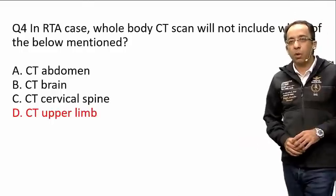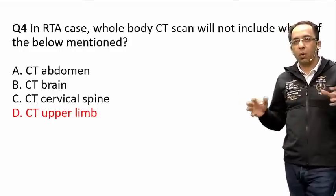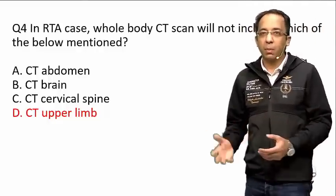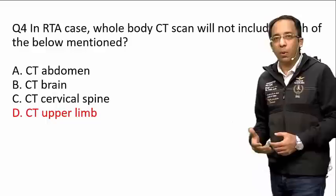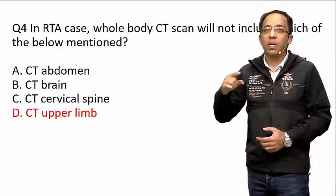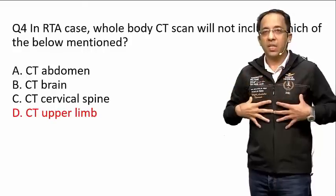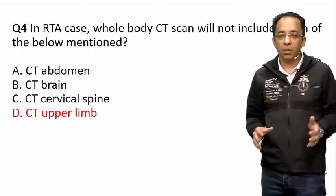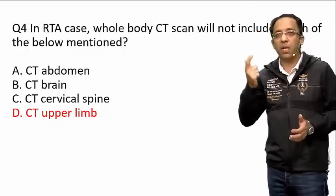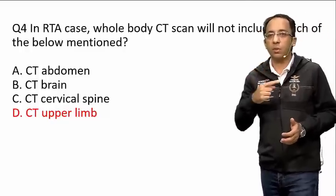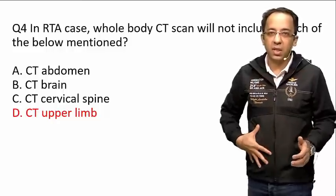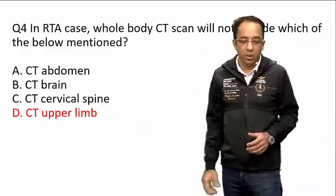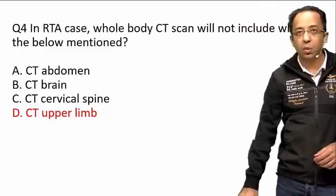There is an approach in trauma patients to do a whole body CT in road traffic accident cases — some recommend it, some don't. The protocol is: NCCT brain, NCCT cervical spine, contrast CT thorax, contrast CT abdomen, and contrast CT pelvis. The answer in the choices was that CT of the upper limb is not part of whole body CT in a patient with road traffic accident.